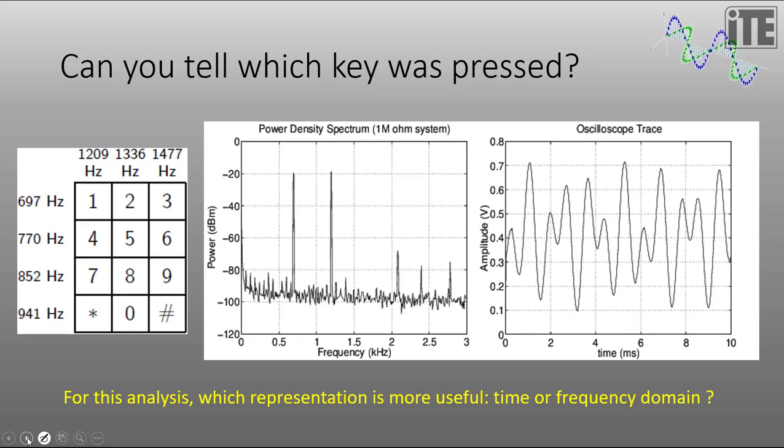But if we look at the next one, which is what key was actually pressed, then it's very clear from this one that the frequency domain is much more useful. Here we can clearly see the two frequencies that were pressed and we can't really tell that very easily from the time domain trace. So in this case, the frequency domain is much more useful.